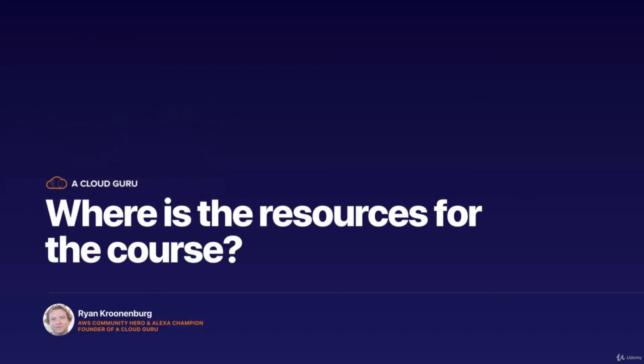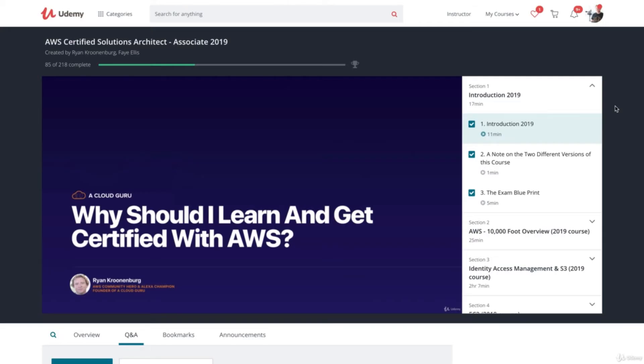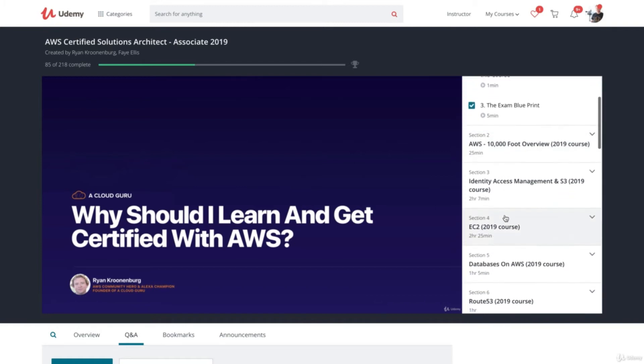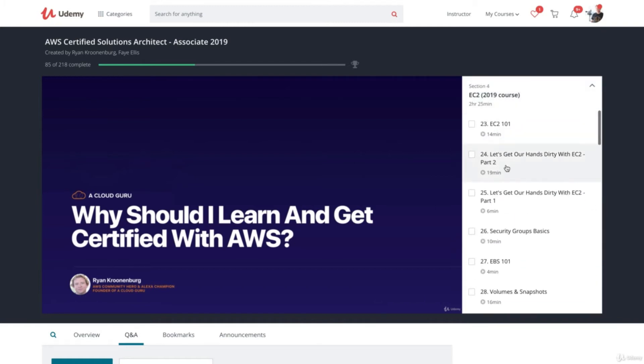Welcome to this lecture. This lecture is for Udemy students only, and I'm going to show you how to find the resources for individual lectures because Udemy has changed the UI and some students have been complaining that they can't find the resources. So let's go over to Udemy. I'm in one of my courses on Udemy — the AWS Certified Solutions Architect Associate course. If you look down here, we can see the different sections: section one, section two, section three, section four. Go to section four — we're going to have a bootstrap script here.